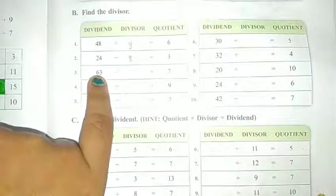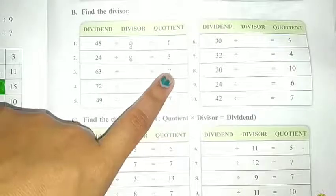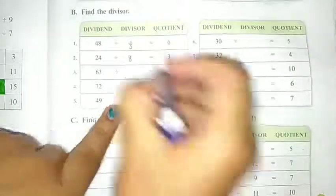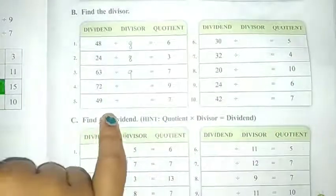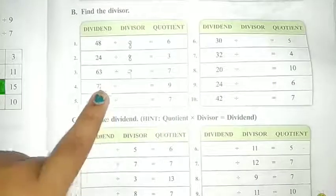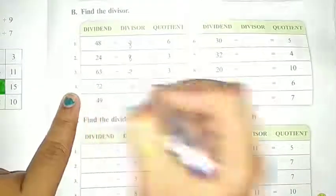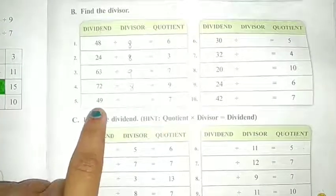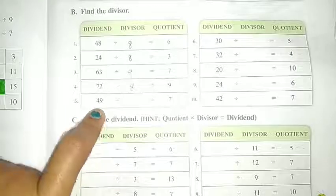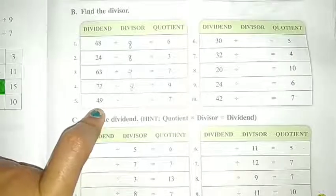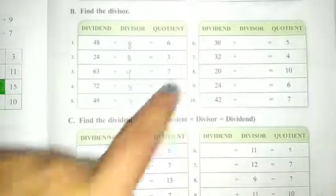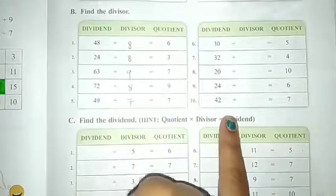63: 7 का table बोलना है, 7 9s are 63. ऐसे ही 9 8s are 72. 7 का table कब तक बोलना है जब तक 49 नहीं मिलते. 7 7s are 49. This all you have to do here by yourself.